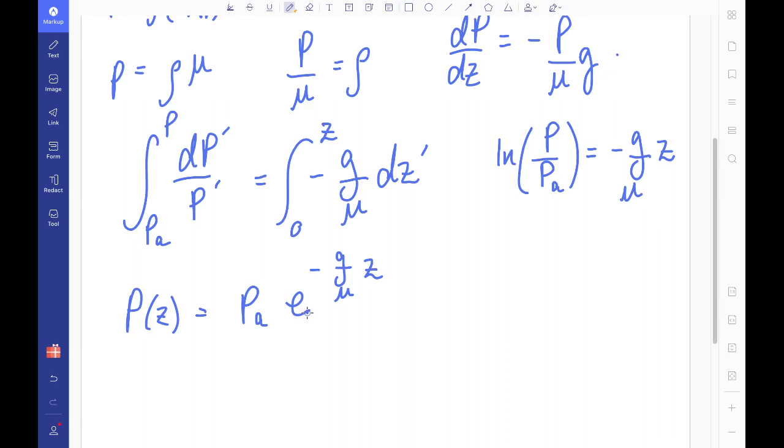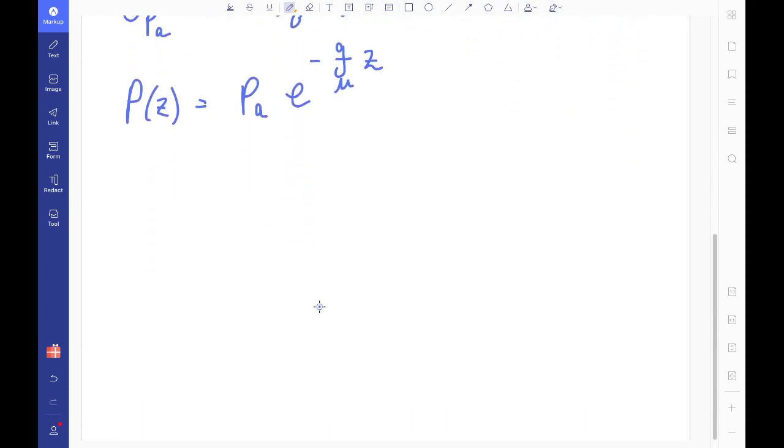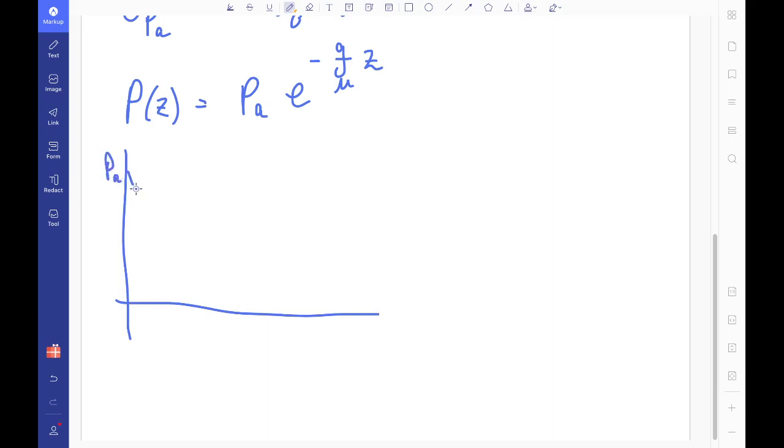So can we think about what our atmosphere is going to look like under these conditions? And yeah, we can. As I already said, this is an exponential decay, so we know it starts at our atmospheric pressure, and then it decreases exponentially like this. Probably needs to be a bit sharper to be exponential, really, but that's the sort of shape that we're looking at.